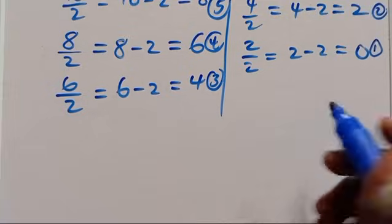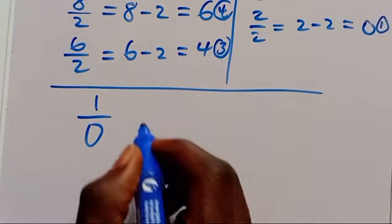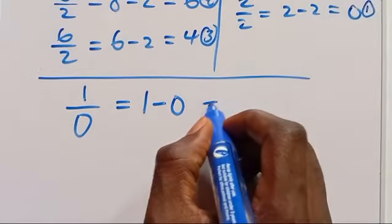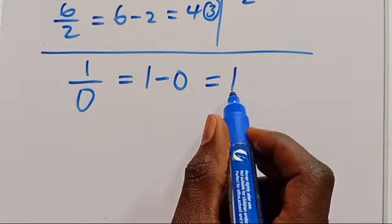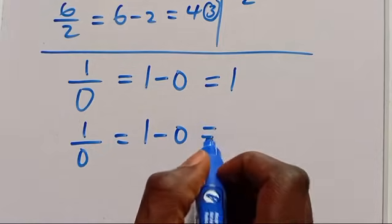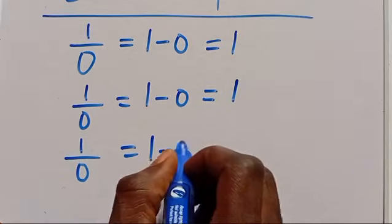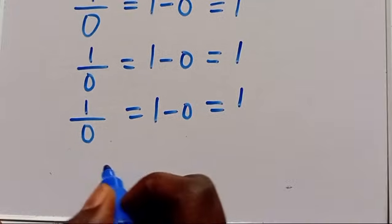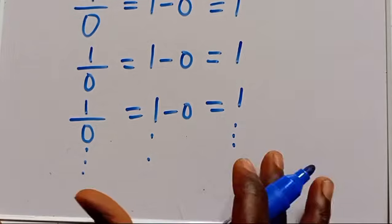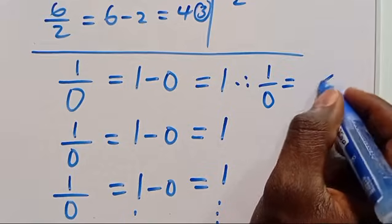Likewise, when we have 1 divided by 0, this will be 1 minus 0, giving us 1. When you also pick this 1, we have 1 divided by 0, which is again 1 minus 0, giving us 1 again. This continues, so 1 divided by 0 will always give you infinity.